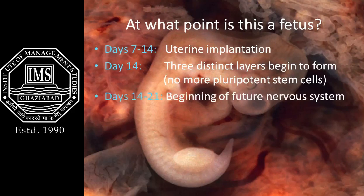Three distinct layers of cells begin to emerge: an outer, middle, and inner layer. The cells in these layers are not yet forming mature organs, but their fate is predetermined. The outer layer will eventually form the skin and, interestingly, the nervous system. The middle layer will become the muscles, bones, and heart. The inner layer will become the gut lining and internal organs.